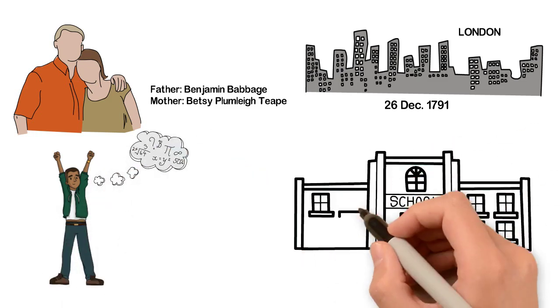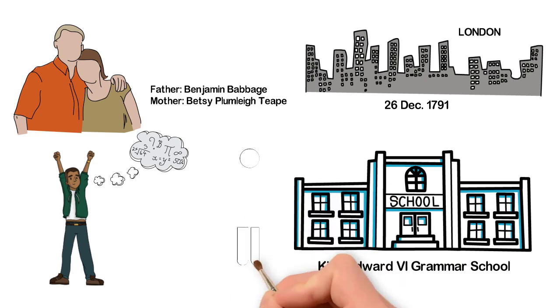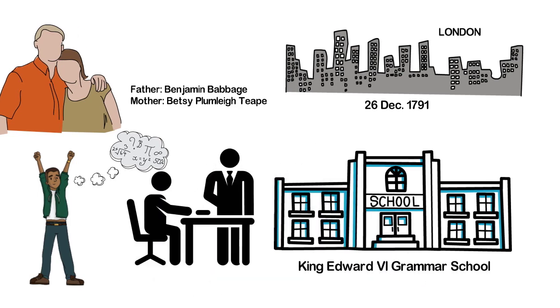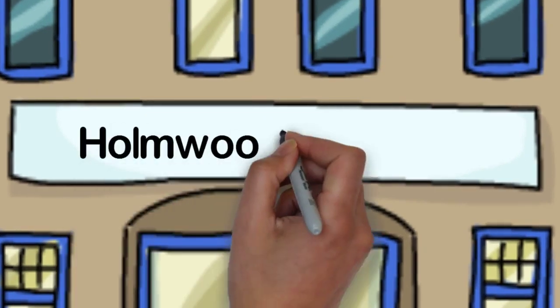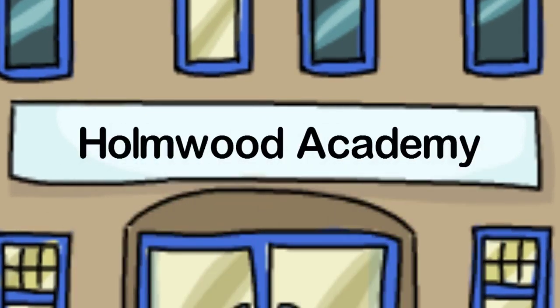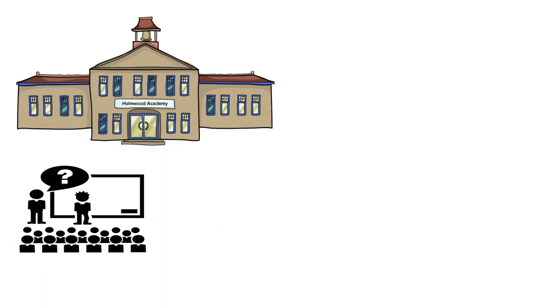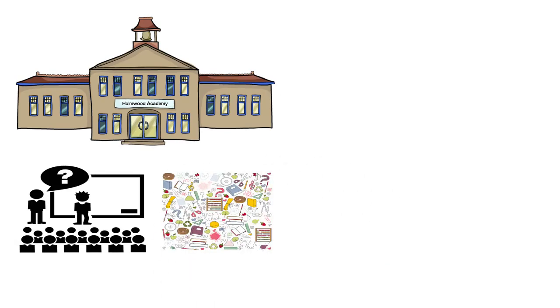He was admitted to King Edward VI Grammar School in England, but due to health issues at age 8, he had to return home to study. After that, he attended Holmwood Academy in Enfield for his studies, focusing on mathematics at a renowned school in London.